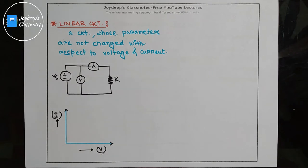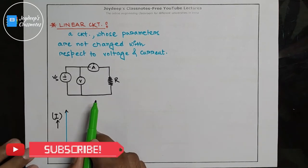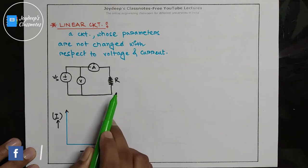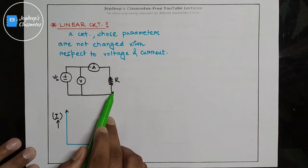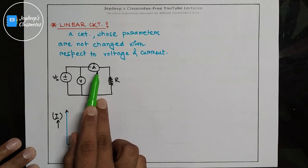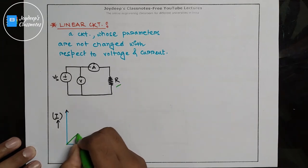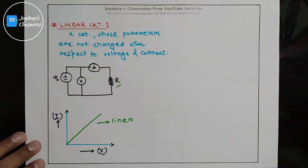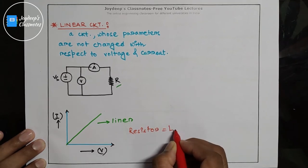A linear circuit is a circuit whose parameters are not changed with respect to voltage and current. If you take this circuit for example, a resistor is connected along with this voltage source. Now we want to find out the IV characteristics for this resistance. We have connected a voltmeter across this resistance and an ammeter in series with this resistance. If we draw the IV characteristics for this resistance, we will find out that it follows a linear path. So the graph is a linear graph, and this is why a resistor is a linear element.